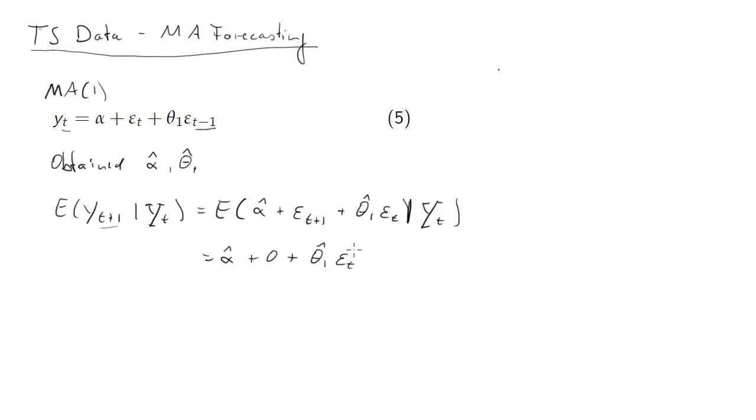So this is the equation which we will need. All that information will be available at time t. The question is now, of course, where does this guy come from? So where does epsilon_t come from?